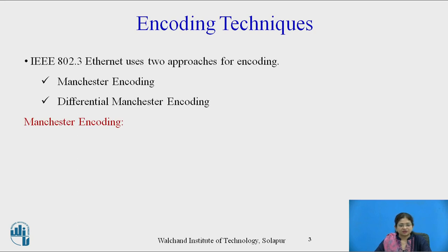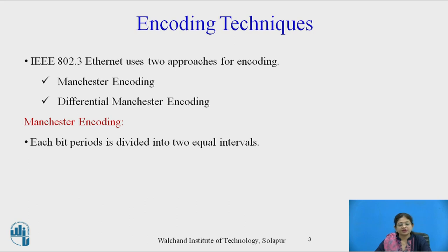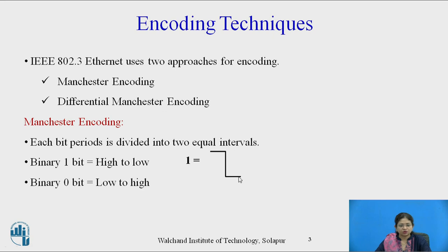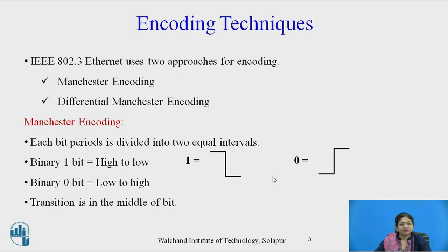Manchester encoding can be represented using two conventions: the Thomas convention and the IEEE 802.3 convention. Each bit period is divided into two equal intervals. A binary one bit is represented as a high-to-low signal, whereas a binary zero is represented as a low-to-high signal. The transition occurs in the middle of the bit.